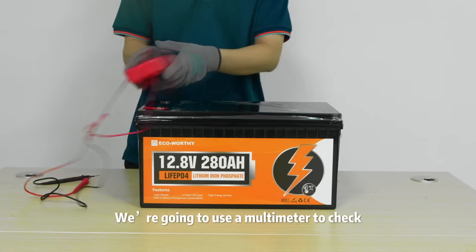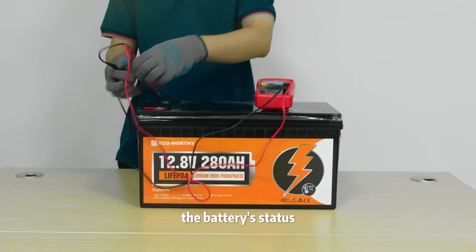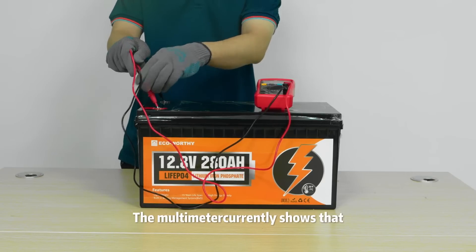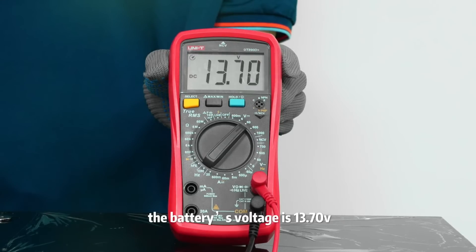We're going to use a multimeter to check the battery status. The multimeter currently shows that the battery's voltage is 13.70 volts.